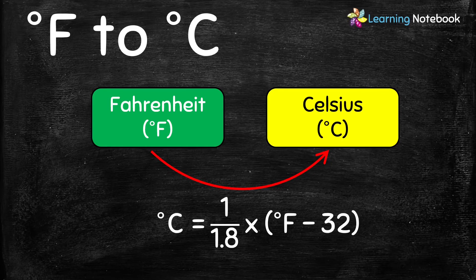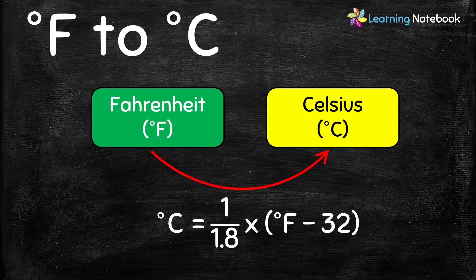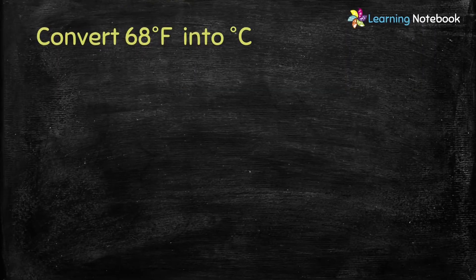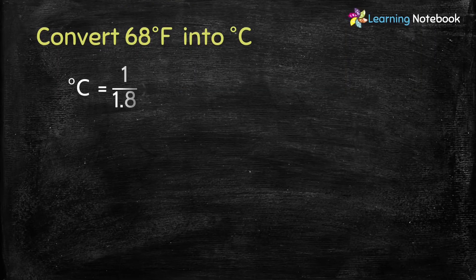One more formula is: Celsius equals 1 upon 1.8 into Fahrenheit minus 32. So now let's solve the same question using this second formula.